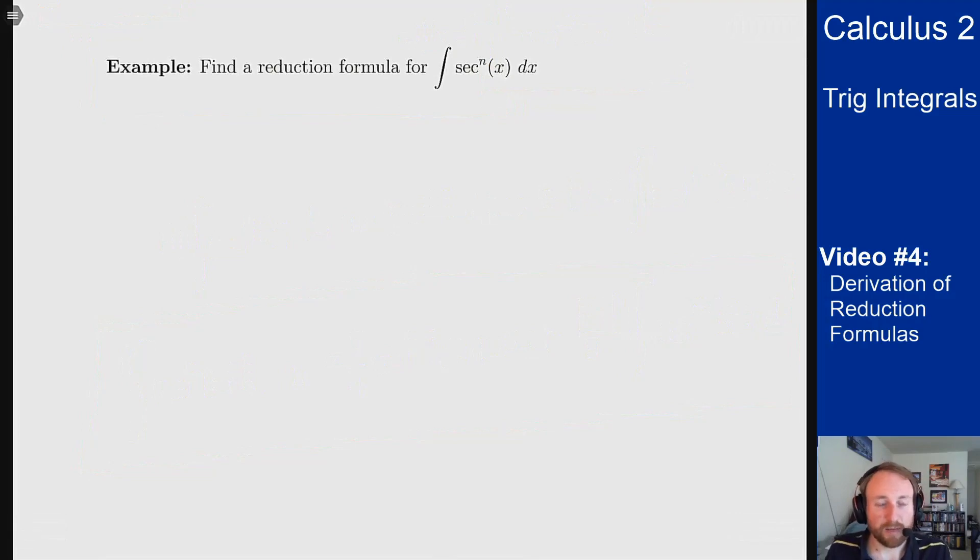As another application of the same process let's find a reduction formula for the integral of secant to the n of x dx for n at least 2. Now we'll see how this becomes useful in the next video talking about different trig function integrals but we'll want a formula like this as well for powers of secant. So what can we do here?